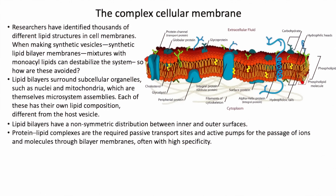Within each one of those, you have other organelles like nuclei and mitochondria that have their own bilayer assemblies with their own constitution — different from what's on the outside of the cell. Nobody knows how that was done. Plus, these have proteins: there's a non-symmetric distribution, and then there are proteins that go through the membrane.